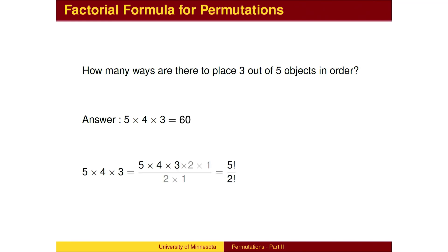Here is another approach based on factorials. We start with the numerator, as if we are placing all 5 marbles in order as a full permutation. We then realize that we don't need the last two, so we remove the last two factors by dividing by 2 times 1. Note that there were 5 marbles to start, and we were asked to arrange 3 of the 5 in order, so the factorial that we divide by is the number of marbles left over, in this case 2.